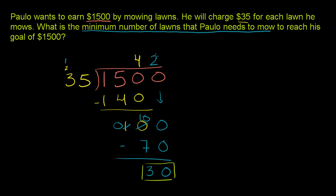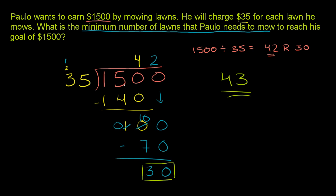If he mowed 42 lawns, he'd be 30 short of $1,500. 35 times 42 is 1,470. So 1,500 divided by 35 equals 42 remainder 30. 42 lawns won't be enough — he'd still have $30 more to earn. So he's going to have to mow one more lawn to get another $35, leaving him $5 over the goal. He is going to have to mow 43 lawns to cross the threshold of $1,500. If he mows 43 lawns, he'll actually have $5 more than $1,500.